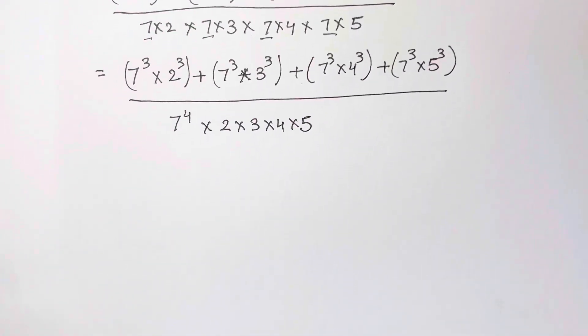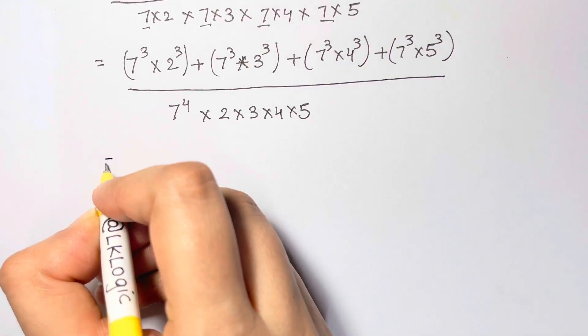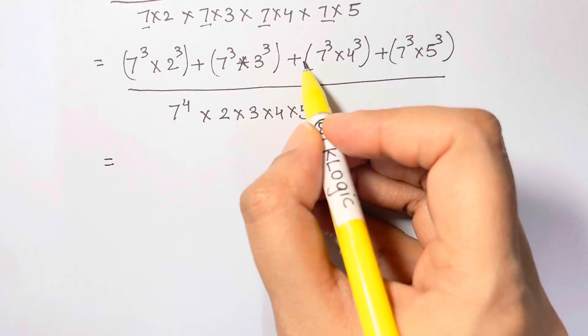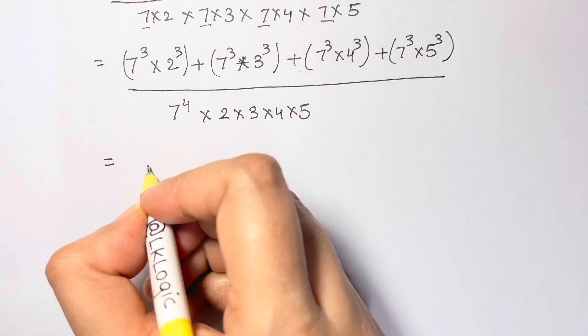Now, what can we do to solve this? Here, I have 7 cube common in all the terms, so let's take it out.